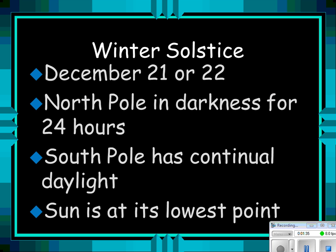The winter solstice happens around December 21st or 22nd. That's when the North Pole is in darkness for 24 hours because it's pointed away from the Sun. The South Pole has continual daylight because it's tilted towards the Sun. The Sun appears at its lowest point from our view in the Northern Hemisphere.